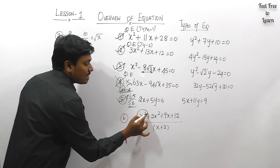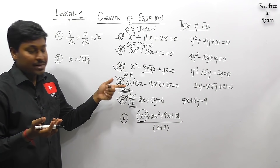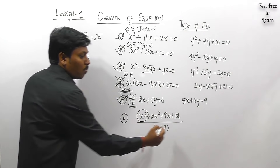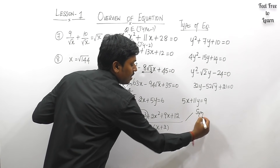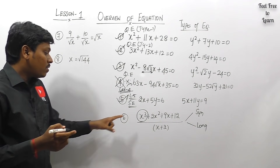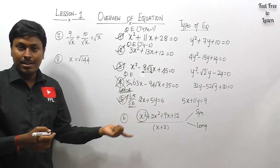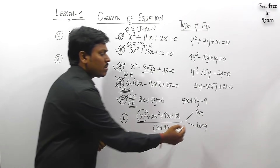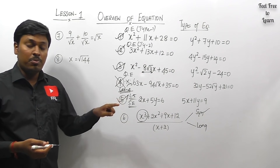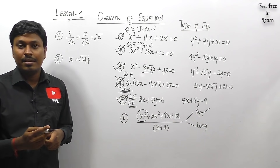If an equation starts with x² it is quadratic; if it starts with x³ there are two methods to solve it: the synthetic division method and the long division method. The synthetic division method is the easiest. After solving by either method, you find the values of x and y.